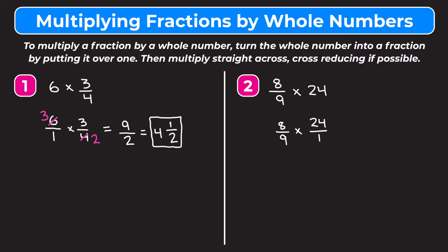We check if we can cross reduce. We can cross reduce nine and 24 by dividing them both by three: nine divided by three is three, and 24 divided by three is eight. Now we have eight times eight on top, which is 64, and three times one on the bottom, which is three.